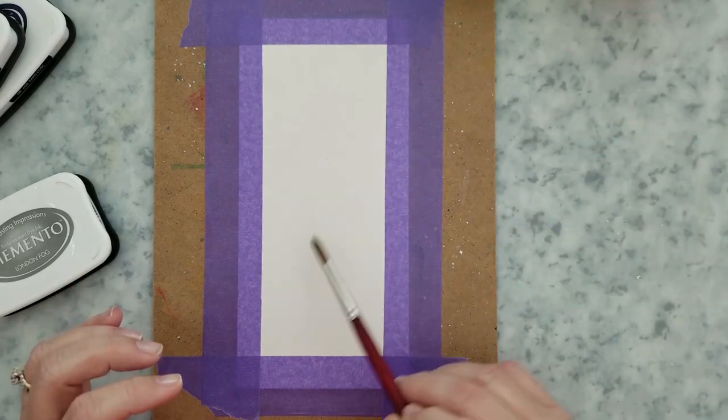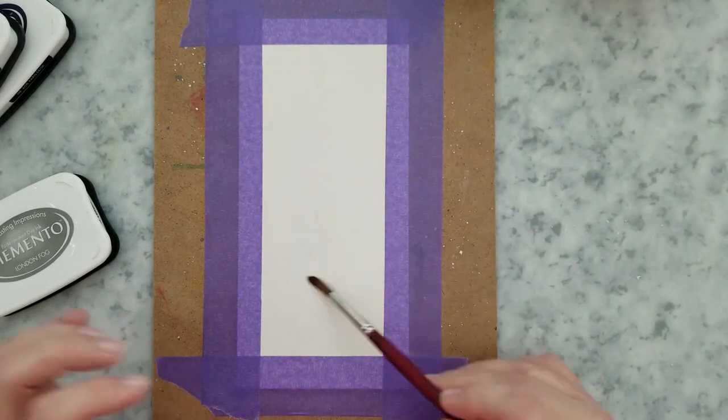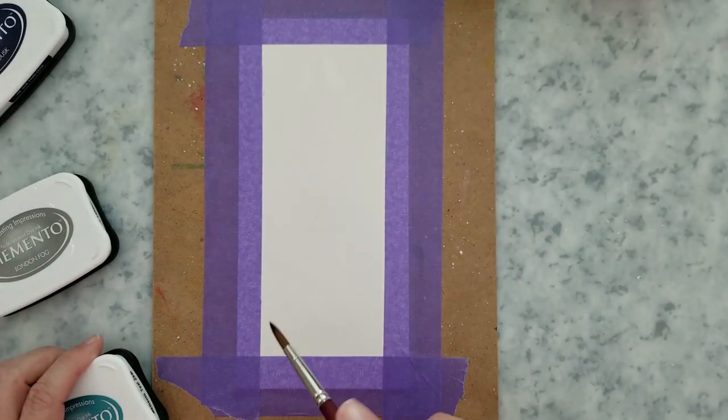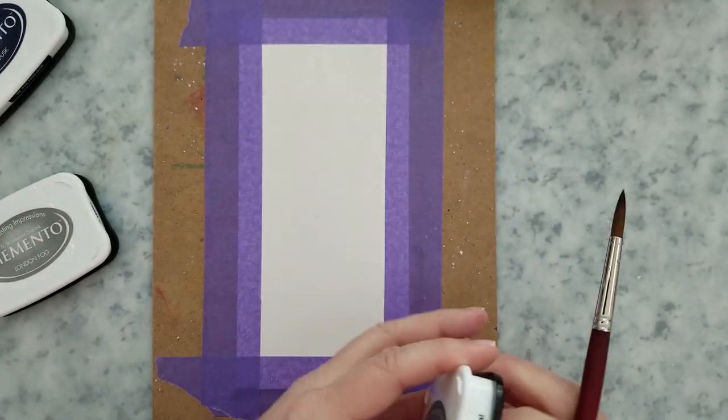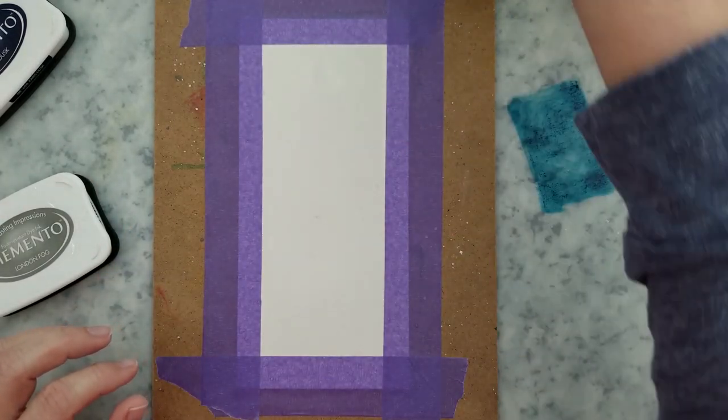So to create the galaxy background, I'm using Memento dye inks in the colors Teal Zeal, Paris Dusk and gray flannel to start. I have a piece of Arches watercolor paper taped down to a hardboard.